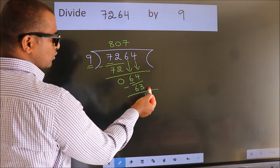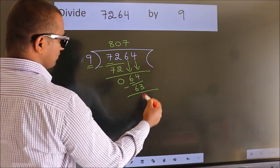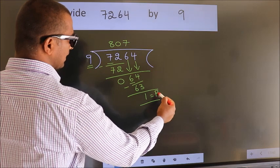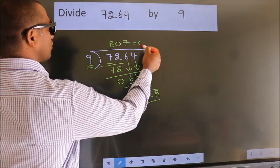No more numbers to bring it down, so we stop here. This is our remainder. This is our quotient.